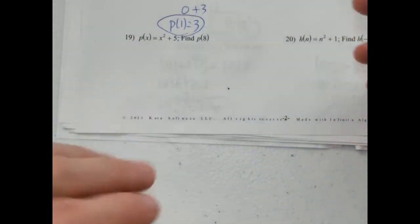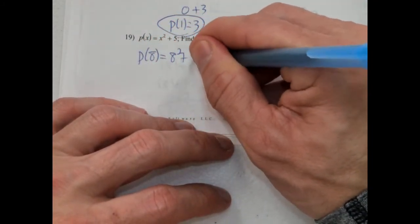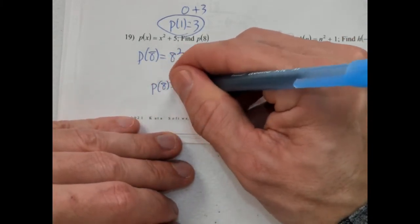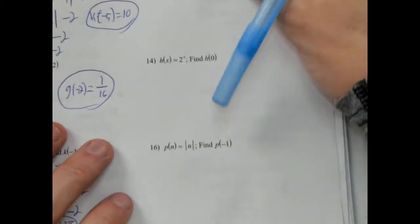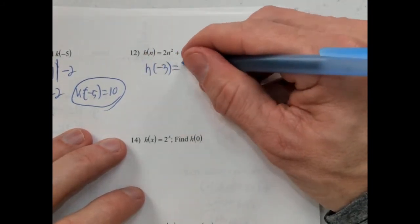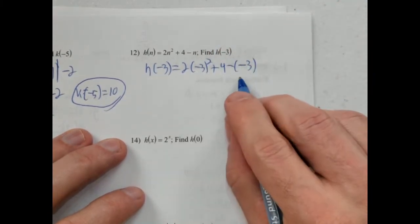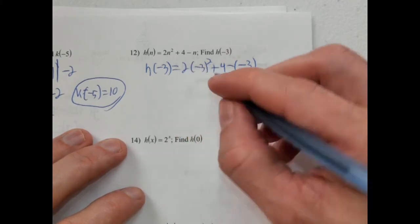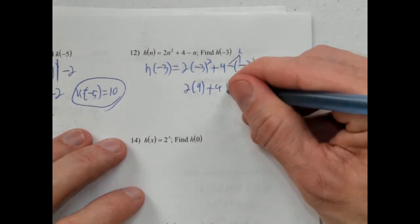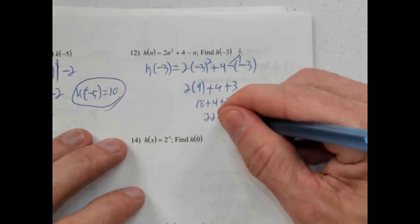p of 8 equals 8 squared plus 5. 8 squared is 64, plus 5 is 69. So p of 8 is 69. Then h of negative 3: 2 times negative 3 squared plus 4, minus negative 3. Be careful when you plug in the negative — negative 3 squared is positive 9. So 2 times 9 plus 4, and that minus negative 3 becomes plus 3. 2 times 9 is 18, plus 4 is 22, plus 3 is 25. So h of negative 3 is positive 25.